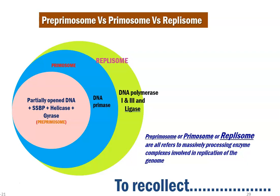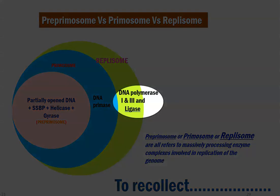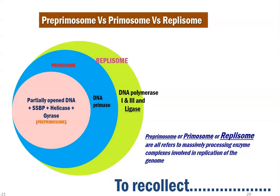If you look at the pre-primosome, it is found to have a partially opened DNA covered with single-strand binding protein, a helicase protein, and gyrase protein — all enzymes that play a main role during the initiation of DNA replication. When DNA primase enzyme, required to make short stretches of RNA primer, joins these complexes, it forms into the primosome complex. With the primosome complex, when DNA polymerases 1 and 3 and the final enzyme ligase join together, it forms a large, massively processing enzyme complex involved in DNA replication — the replisome.